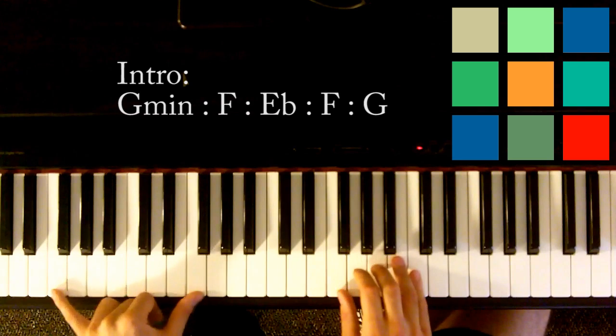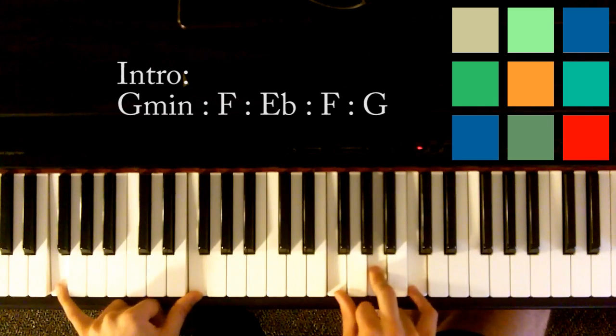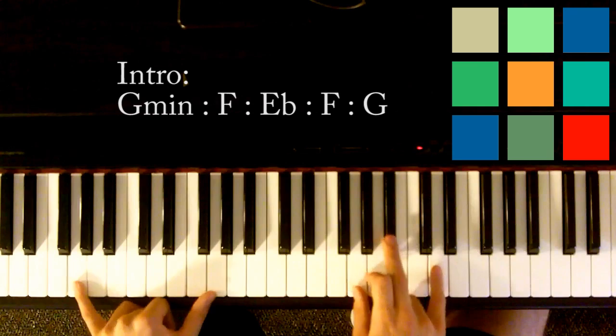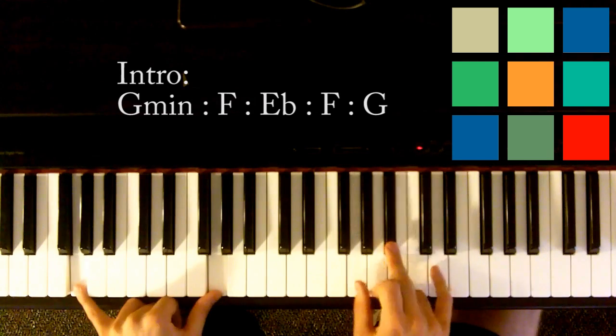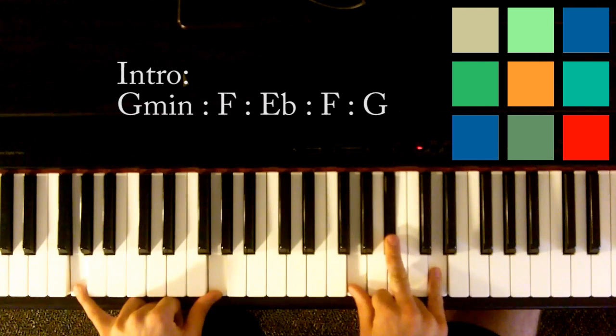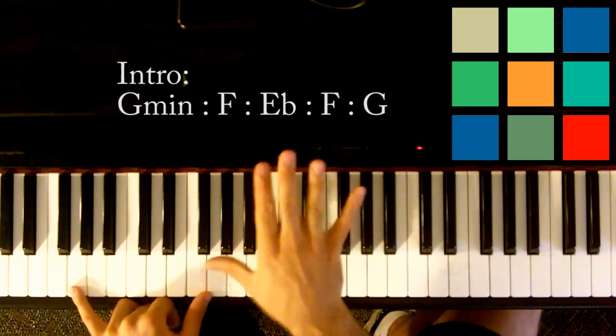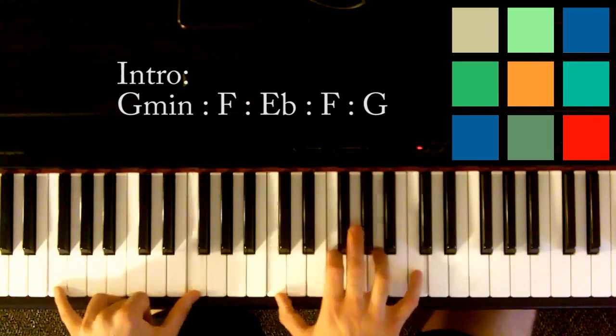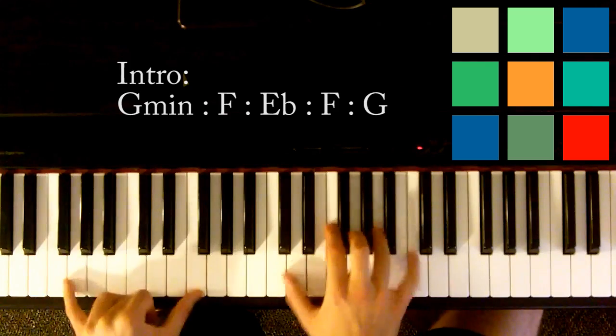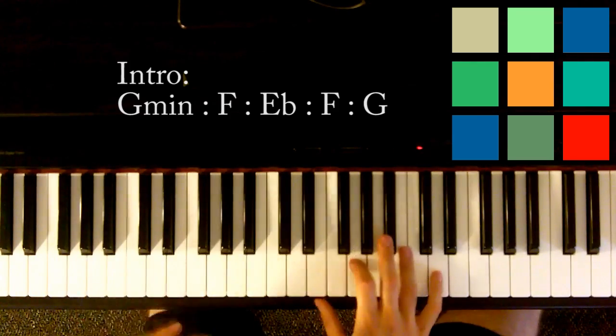And then you're going to come back up that little move, back up to an F. So F's, F, A, and C. And then G minor. G's, G, B flat, D. Okay? So that's the intro. I'll have it written up here for you. It's really easy. Three, four, one, two, three, four. Okay?